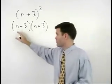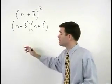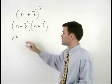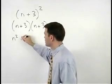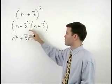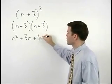So the product of the first terms, n times n, is n squared. Plus the product of the outer terms, n times positive 3, is positive 3n. Plus the product of the inner terms, positive 3 times n, is positive 3n.